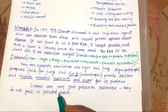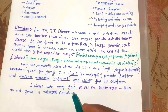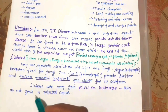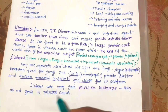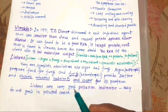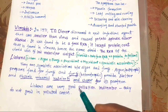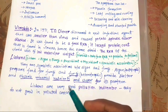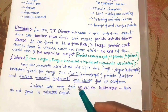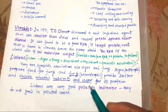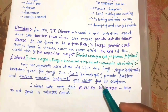Lichens are very good pollution indicators — they do not grow in polluted areas. If there is any pollution, lichens will not be present. So lichens are very good pollution indicators.